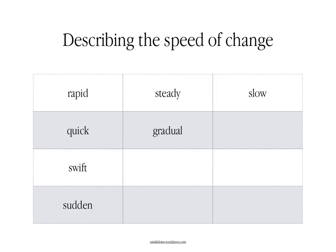If you want to express how quickly or how slowly these changes have taken place, you could use the adjectives 'rapid,' 'quick,' 'swift,' or 'sudden.' If it has been happening steadily, you could talk about a 'steady' increase or growth, 'gradual,' or a 'slow' increase or decrease.